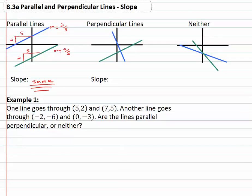Perpendicular lines are lines that intersect at a perfect right angle — a ninety degree angle, not just any angle. In that case, if one line goes down five and over two, the blue line has a slope of negative five-halves. The green line has to counter that in the opposite direction — it goes up two and over five, giving the green line a slope of two-fifths.